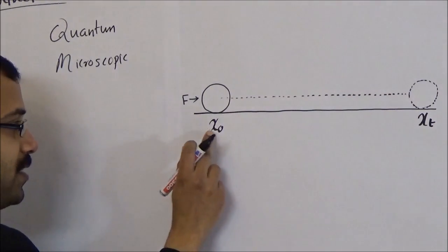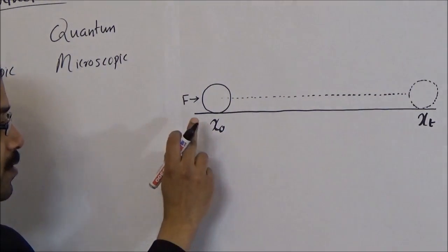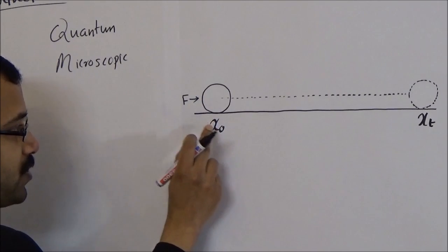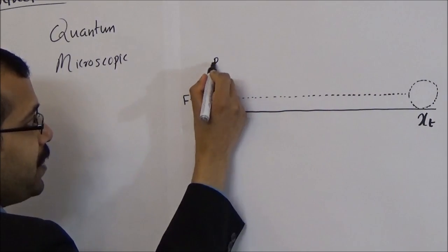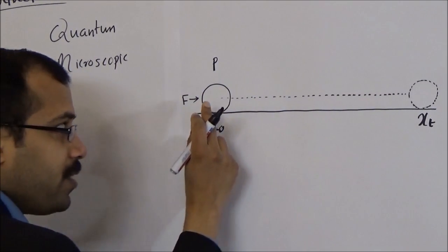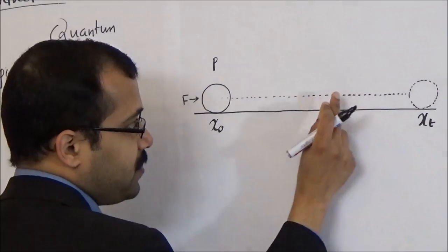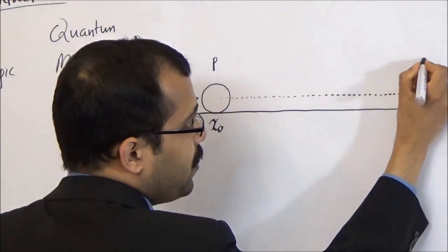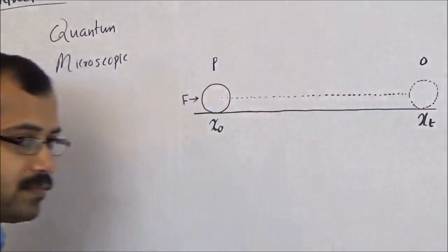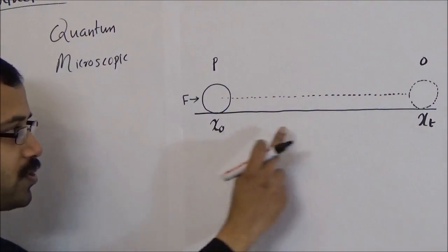We can see that the ball starts to move at the position x0 due to the force F with an initial momentum P, and the momentum then continuously decreases and then it comes to rest where momentum is 0. Between these two positions x0 and xT, the momentum varies continuously.